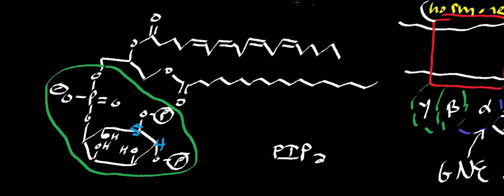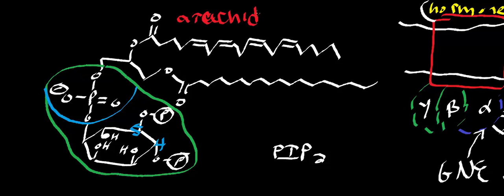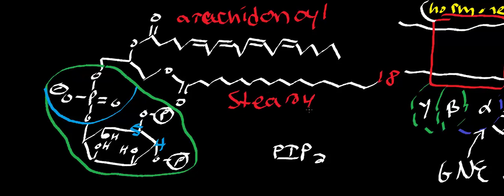The phosphatidyl part refers to the fatty acids and the phosphate group. At the sn-2 position we have arachidonate — the arachidonoyl group. And at the sn-1 position, counting 18 carbons, this is stearate — the stearoyl group. So you have arachidonate and stearate attached to the glycerol component, and what is circled in green is going to be cleaved off in the phospholipase C reaction.